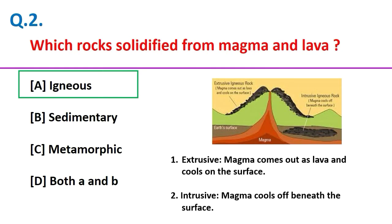Friends, igneous rock can be of two types: extrusive igneous rock, where magma comes out as lava and cools on the surface of the earth, and intrusive igneous rock, where magma cools off beneath the surface of the earth.